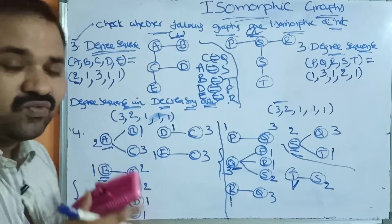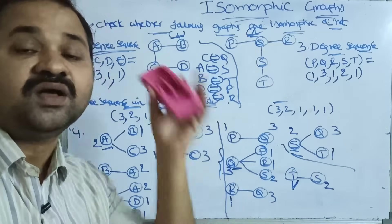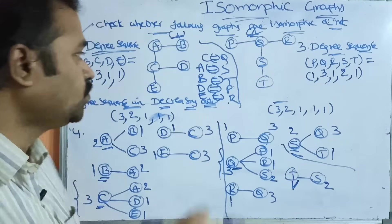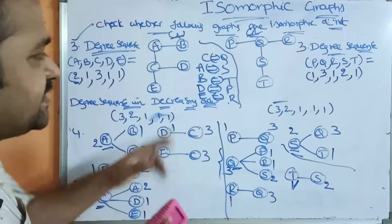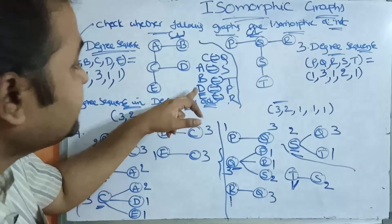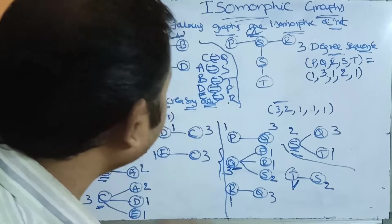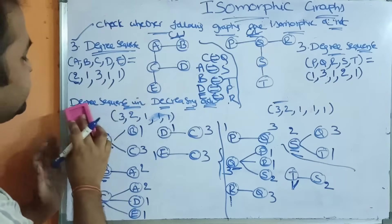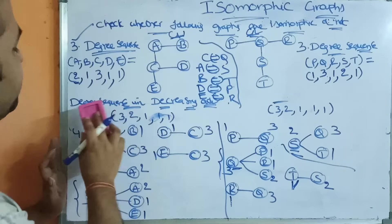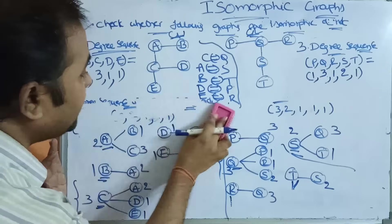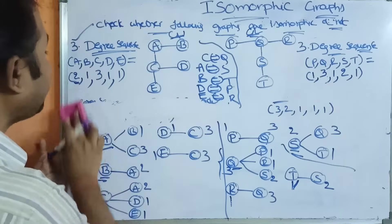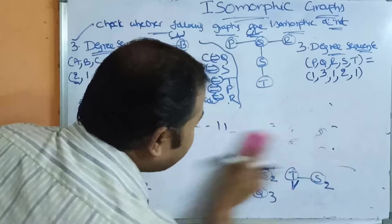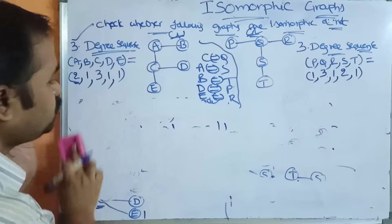So the one-to-one correspondence is: A is equivalent to S, B is equivalent to T, C is equivalent to Q, D is equivalent to P, and E is equivalent to R. For each vertex in graph one there is an equivalent vertex in graph two, so the fourth condition is satisfied.